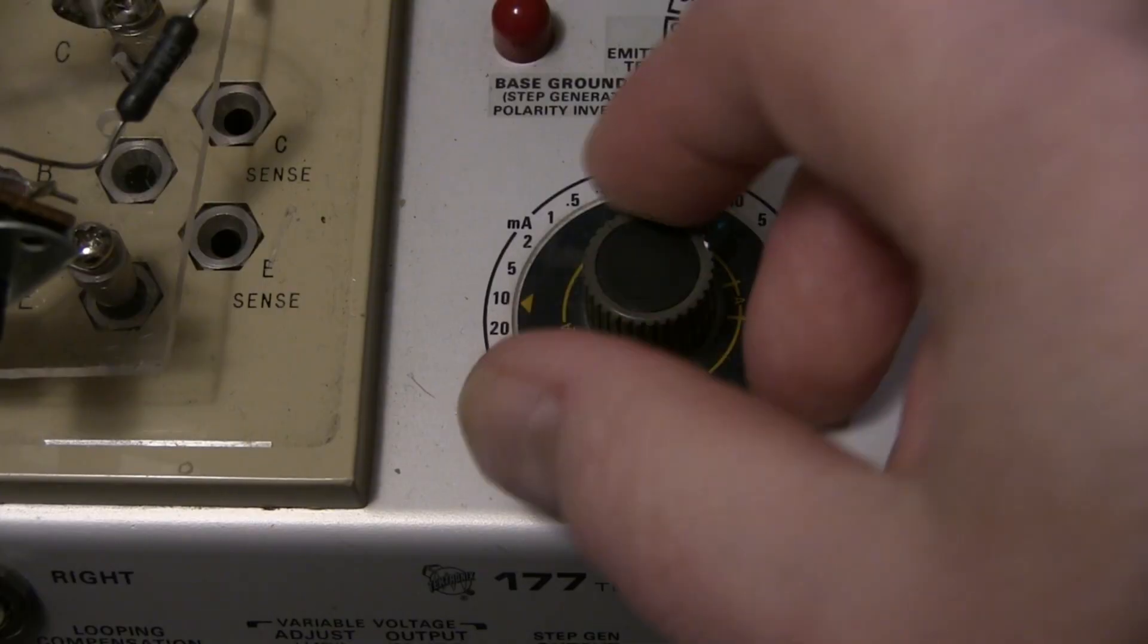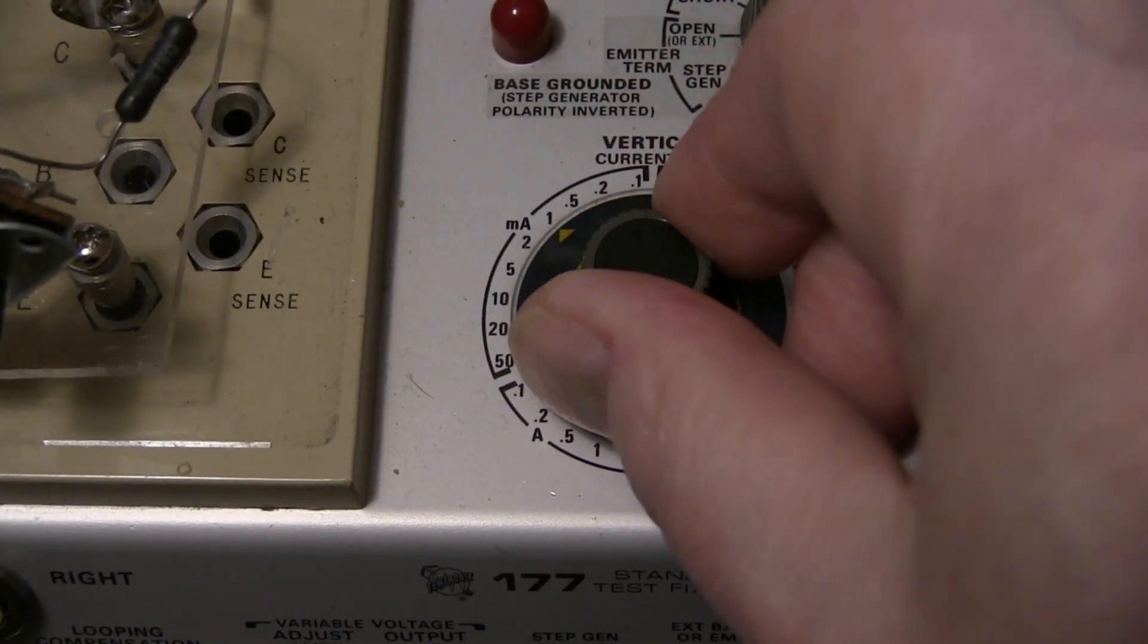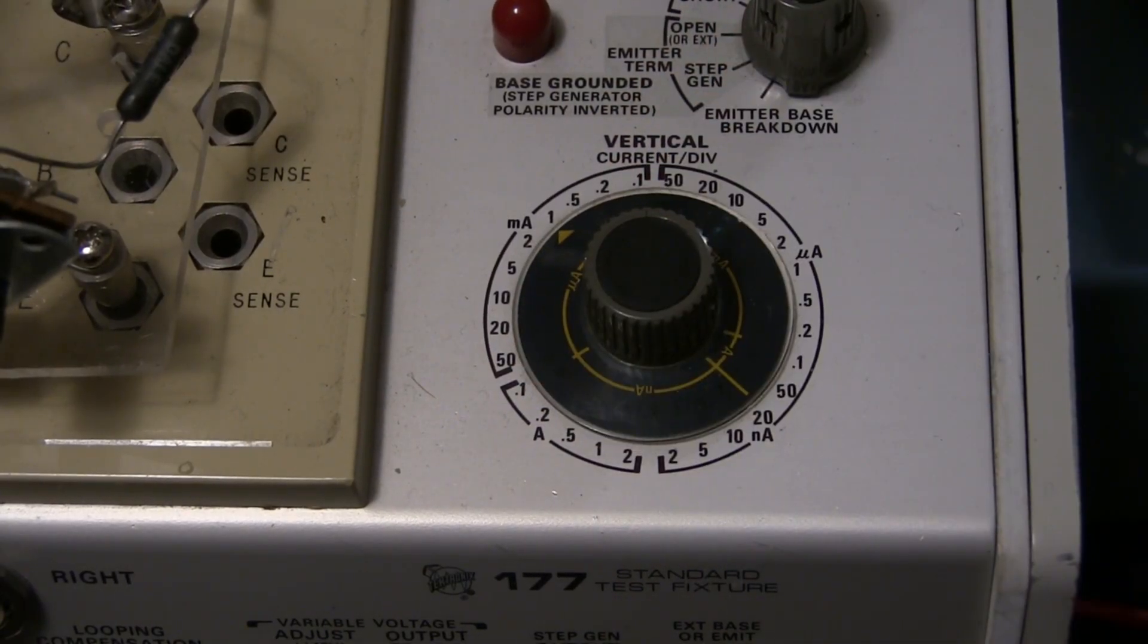Set the vertical current per division to 1 milliamp. The step generator is not used, so its setting does not matter. You may need to adjust the vertical sensitivity later.